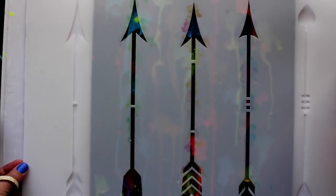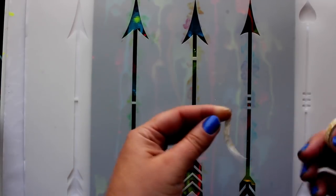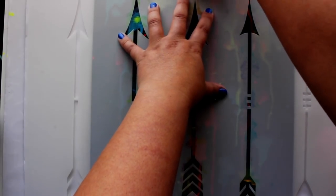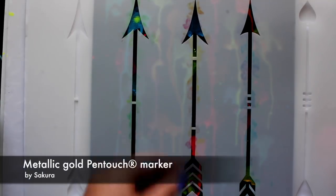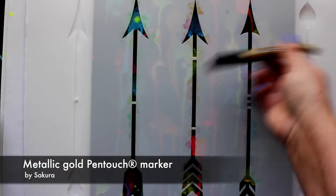Place a stencil on top of your paper. You can use washi tape to hold the stencil in place. One thing I really like about Stencil Revolution stencils is that they're transparent enough to see your design beneath, so it's easy to get the exact placement you want.